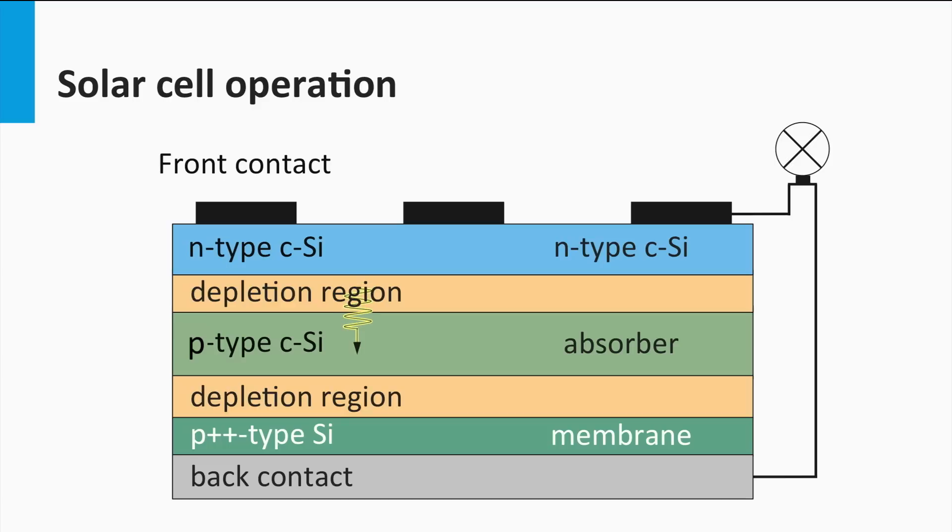The light is transmitted into the absorber layer, where its energy is absorbed. The energy is used to excite charge carriers in the semiconductor material, which are a negatively charged electron indicated by the red dot and a positively charged hole indicated by the blue dot.